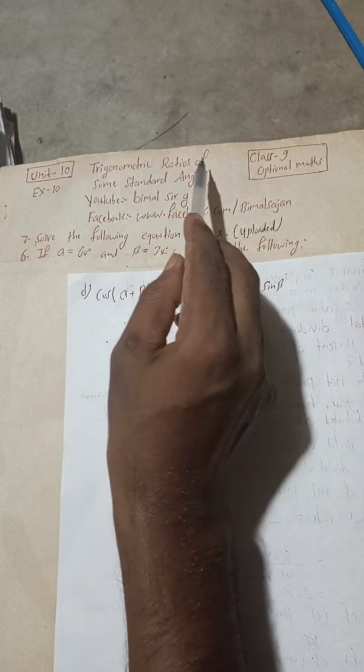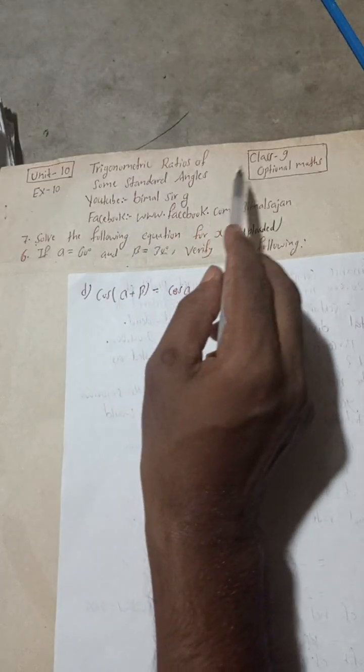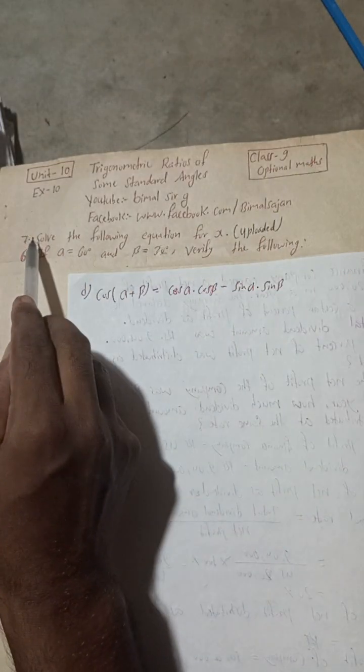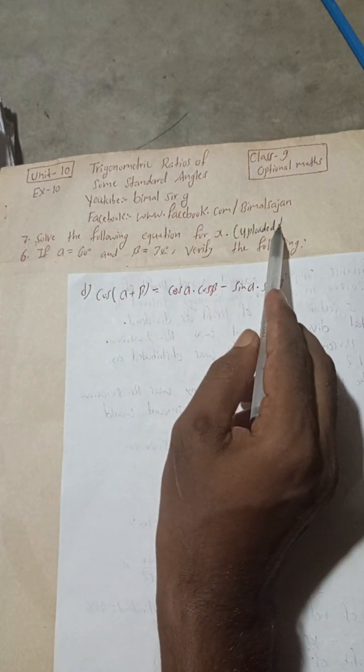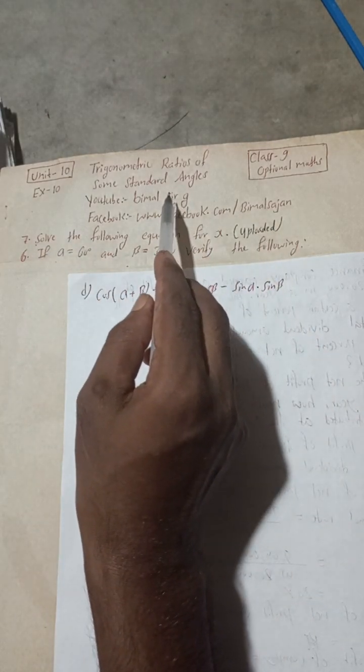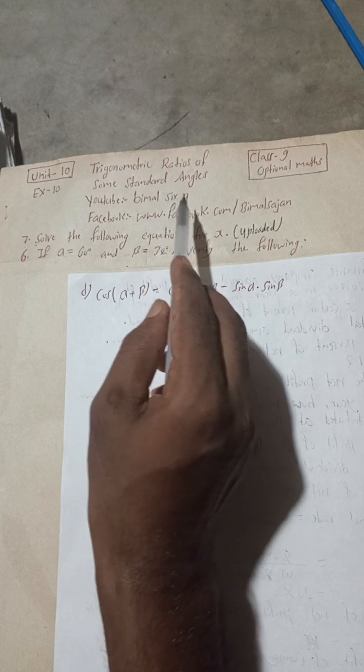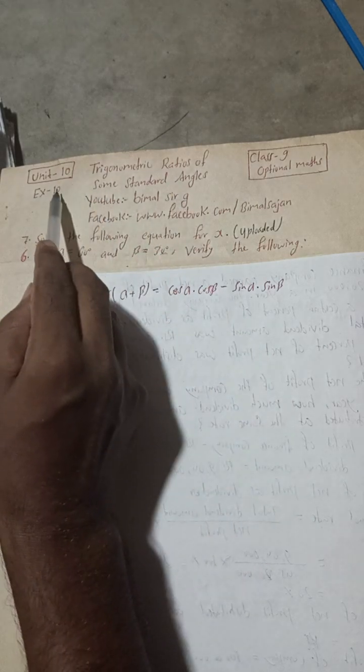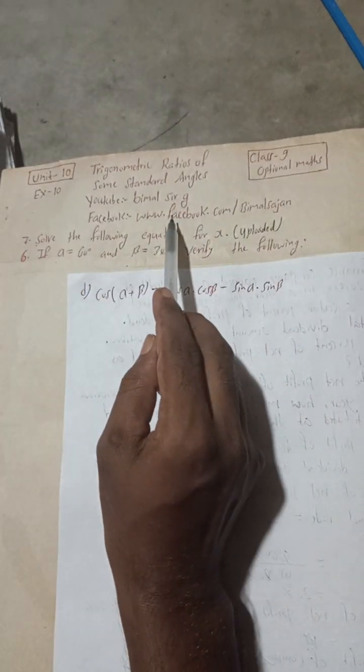Unit 10, trigonometric ratios of some standard angles, class 9 optional maths. All the questions are uploaded in my YouTube channel. You can check the playlist where you will get most of your class 9 and 10 solutions with your exercise name, chapter name, or unit name.